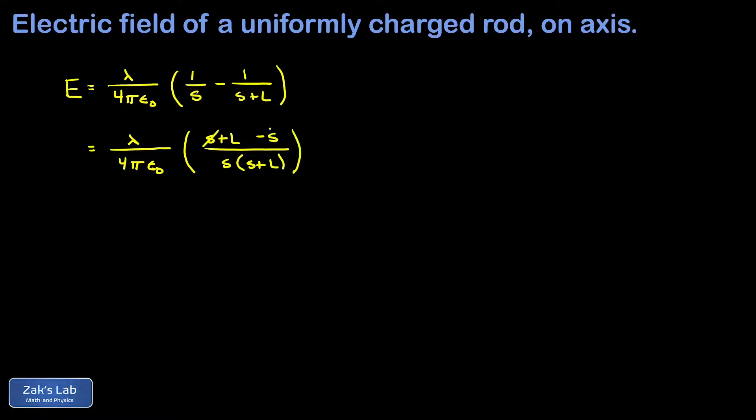So the s's in the numerator are going to cancel and our numerator simplifies to lambda times L and then our denominator is four pi epsilon zero s times the quantity s plus L. Now we immediately recognize that that numerator is just the total charge on the rod it's linear charge density times length. So I end up with a Q in the numerator and a four pi epsilon zero s times s plus L in the denominator.